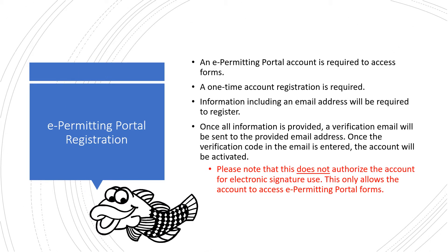The e-Permitting Portal is required to access forms. A one-time account registration is required. Information, including an email address, will be required to register. Once all information is provided, a verification email will be sent to the provided email address. Once the verification code in the email is entered, the account will be activated.